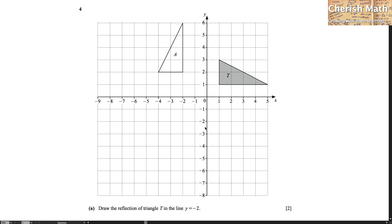The first step in solving this problem is by drawing the line y equals negative 2, and here it is. The next step is by finding the vertices of triangle T one by one.